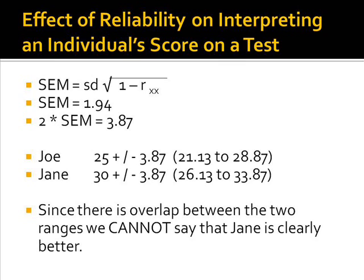Doing this, we find that the standard error of measurement is equal to 1.94. Notice that the standard error of measurement must be multiplied by 2 in order to construct a 95% confidence interval. We use this standard error of measurement, 3.87, to calculate the confidence interval around Joe's score of 25 and Jane's score of 30. Notice that since there is overlap between the two ranges, we cannot say that Jane is clearly better.